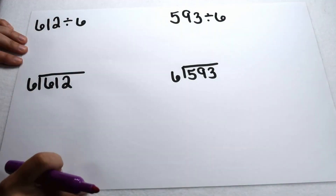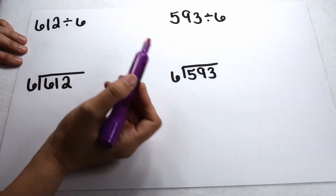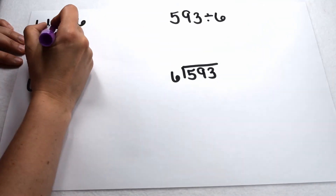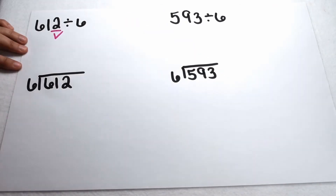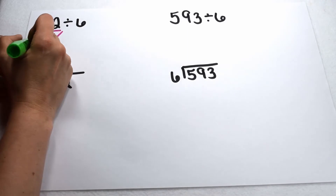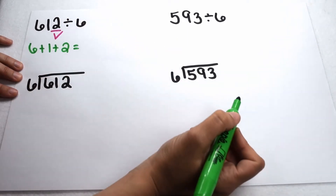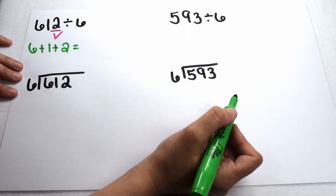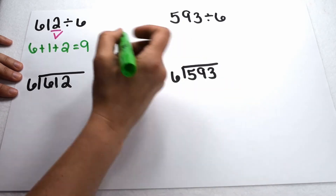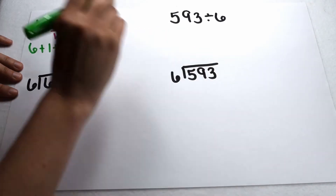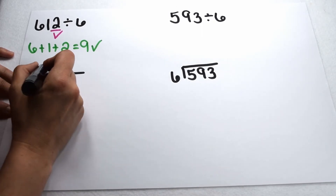We can also use this to check if large values are divisible by six. If 612 is divisible by six, that means it will be divisible by both two and three. Let's start by checking with two: 612 ends in two, which is even, so it's divisible by two. Now let's check divisibility by three — the sum of its digits, six plus one plus two, equals nine. Nine is divisible by three. So since 612 is divisible by both two and three, we can predict it's going to be divisible by six with no remainders.